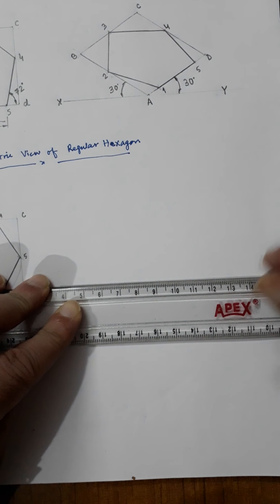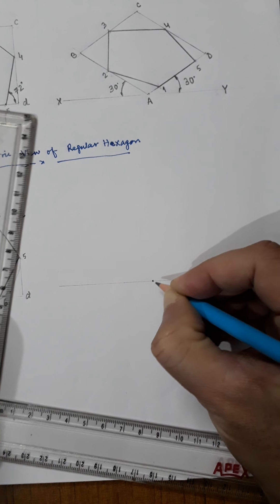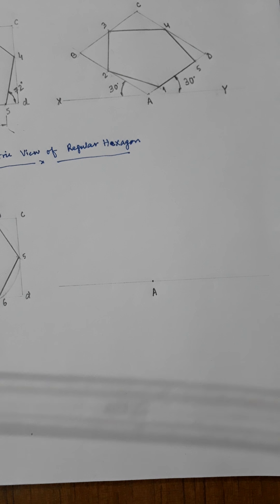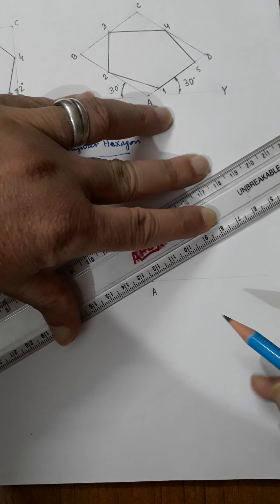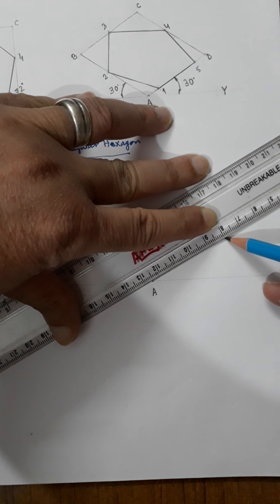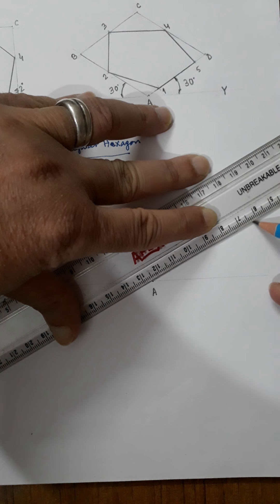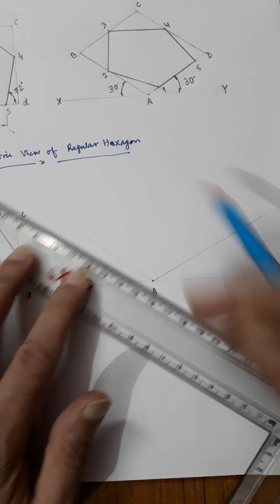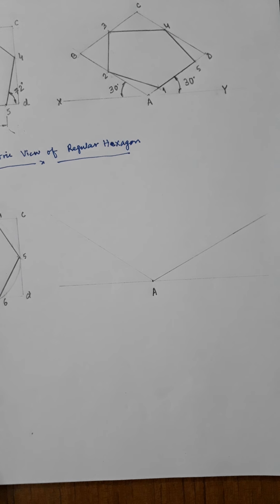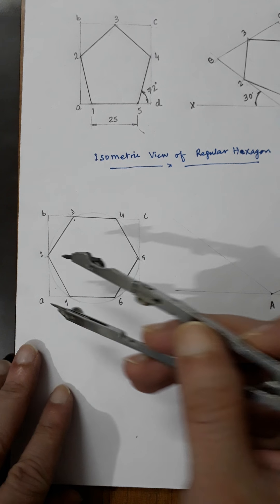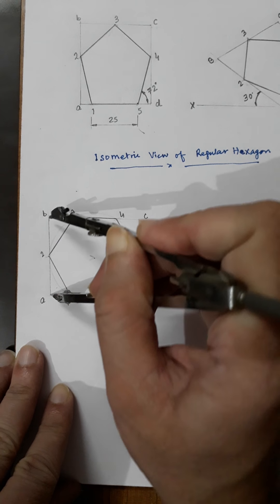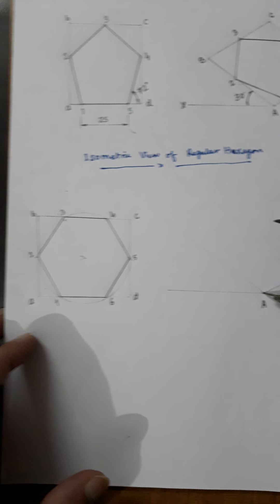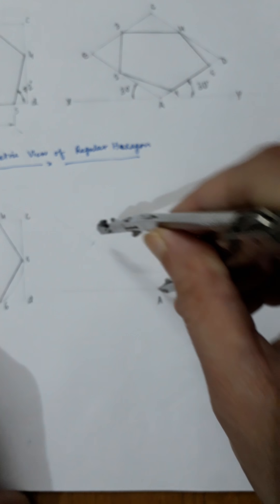So this is the reference line — you can take any point on this. This is point A. Now I will be drawing two 30 degree lines on both sides. I measured 30 degrees on one side and 30 degrees on the other side. Simply take the dimensions from the rectangle: take dimension AB and mark it here, and take dimension AD and mark it on the other side.